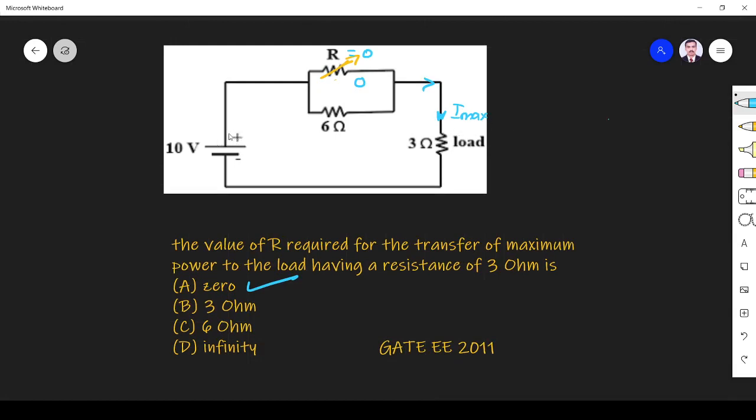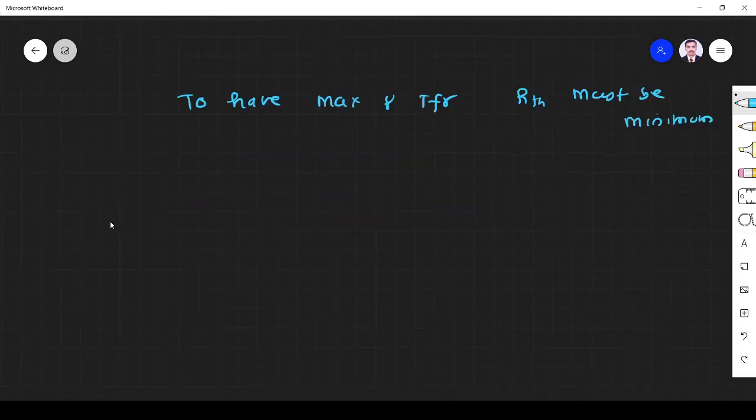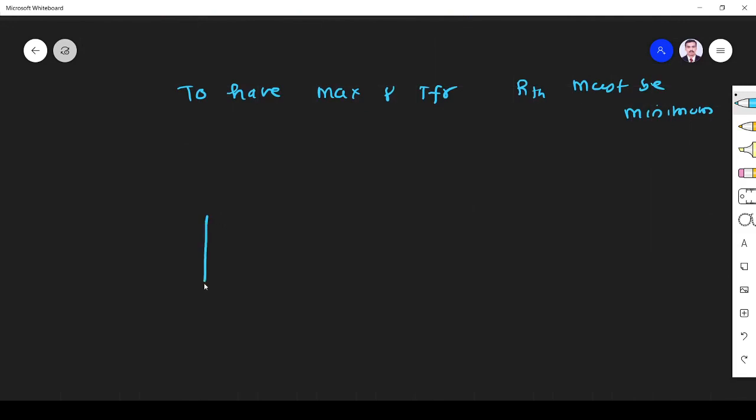If you remove the voltage source, it will become a short circuit. Then we have R here, and this is R, this is 6 ohm. So across the load we have to find the equivalent resistance, R_Thevenin.